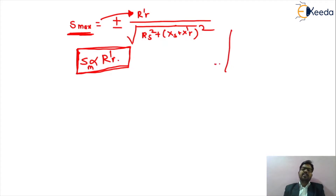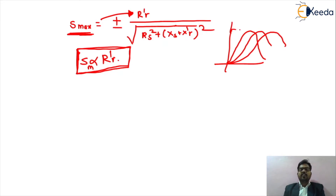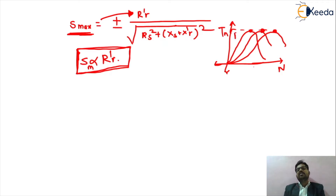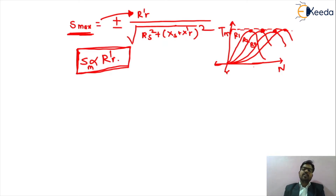In the speed-torque characteristics graph (torque on x-axis, speed on y-axis), the T_max value remains the same across different resistance curves (R1, R2, R3). By changing the value of resistance, the T_max remains unchanged — this is the fundamental concept of the speed-torque relationship for induction motors.